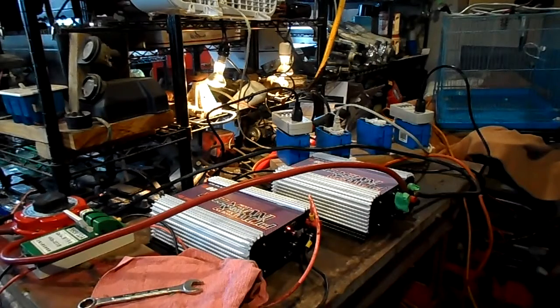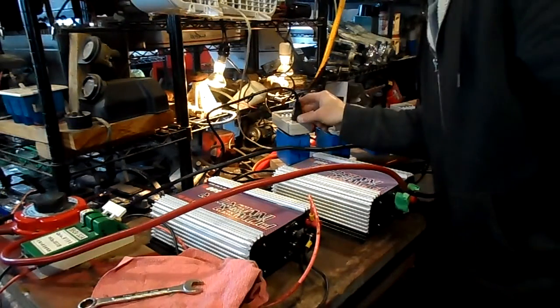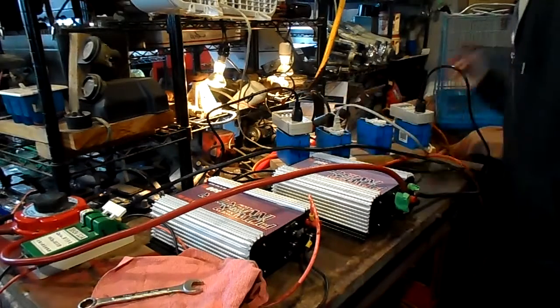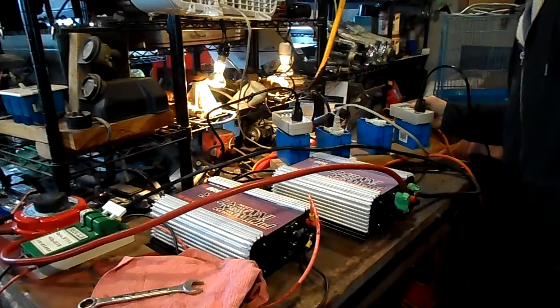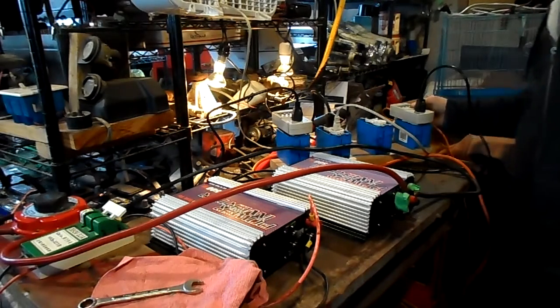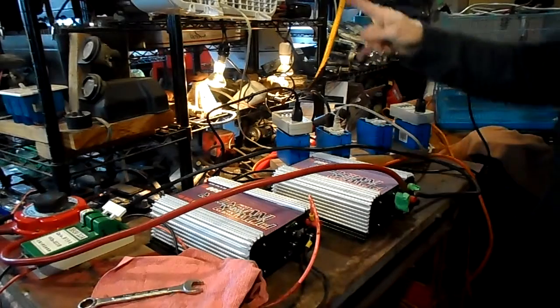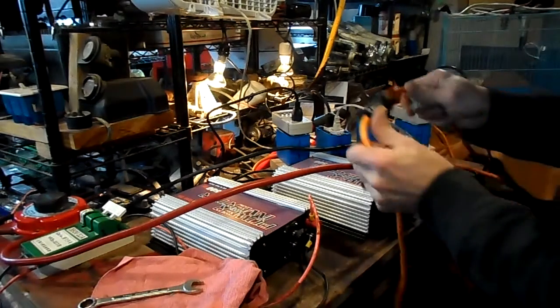Alright, now I have two grid-ties hooked up. We'll turn them both on. Make sure we're making power. 400 watts. 300 watts. Okay, both lights are on, the fan is on. I don't know if you can see that, but here we go. Now if I unplug this, it's supposed to... the lights should go out if the grid-ties work properly. Here we go.